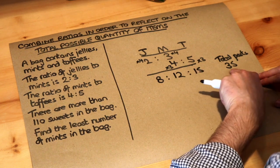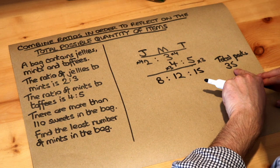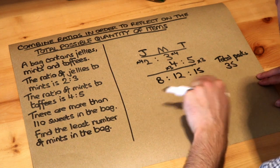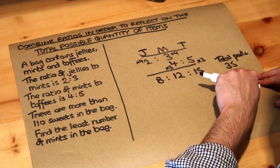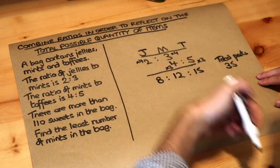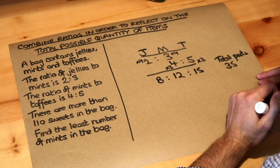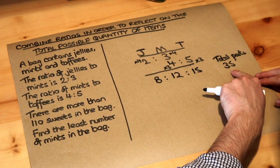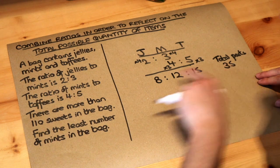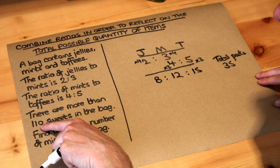Now that means that the total number of sweets has to be a multiple of 35 because each time we have a lot of 8 jellies and 12 mints and 15 toffees that gives us 35 sweets and then we can add another 35 sweets and another 35 sweets etc. And it would still be in this ratio. So we have to have a multiple of 35 that is more than 110.